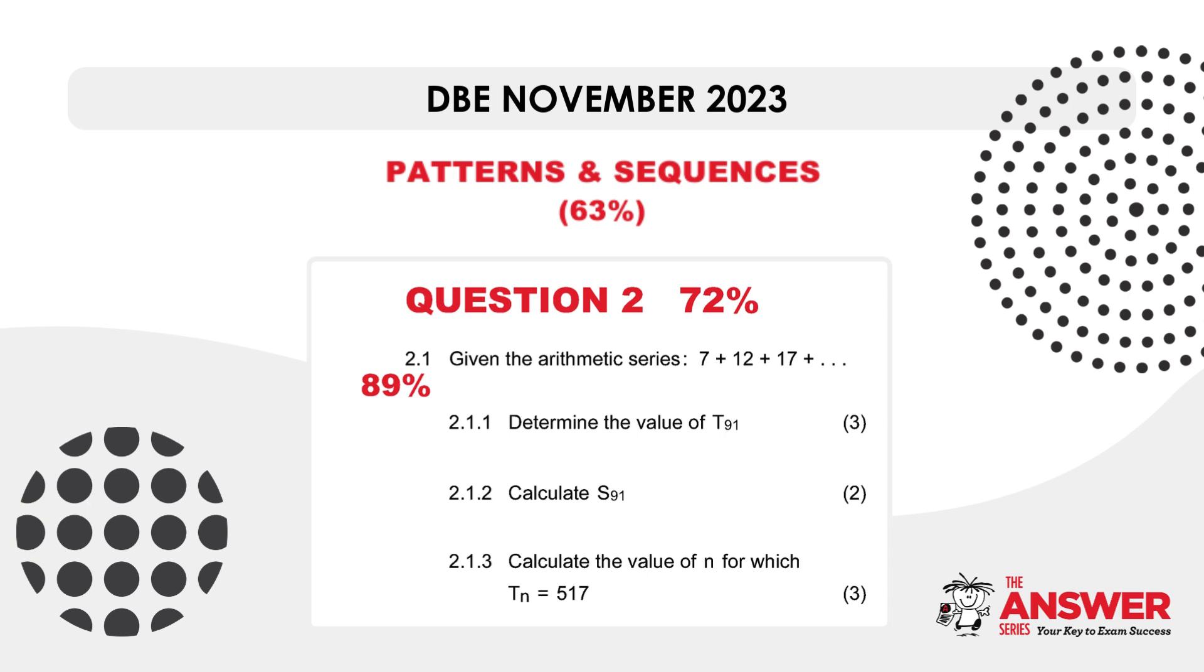If we look just at question 2.1, this achieved an 89% average. The question involved a given arithmetic series and learners had to first determine the value of the 91st term, then calculate the sum of the first 91 terms, and finally calculate the value of n for which the nth term equaled 517.